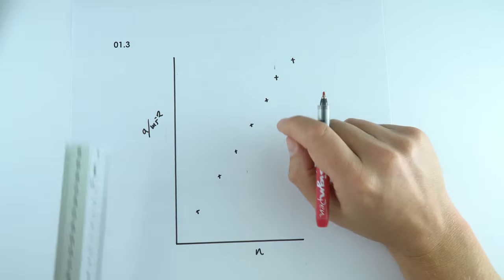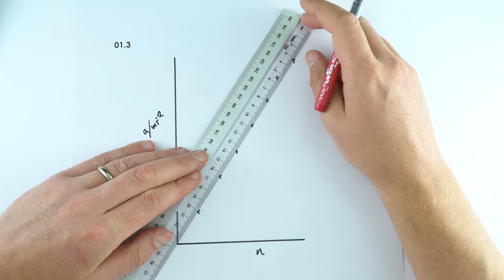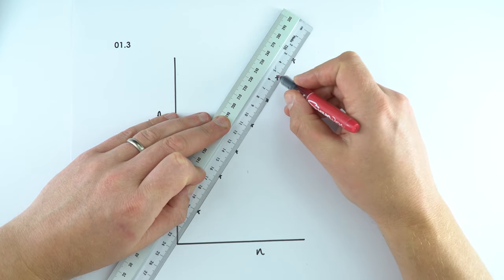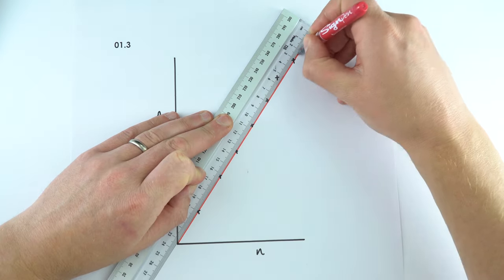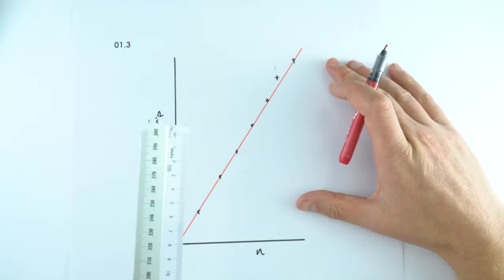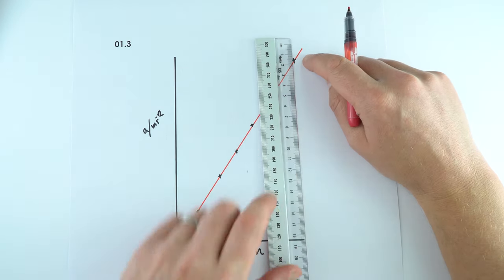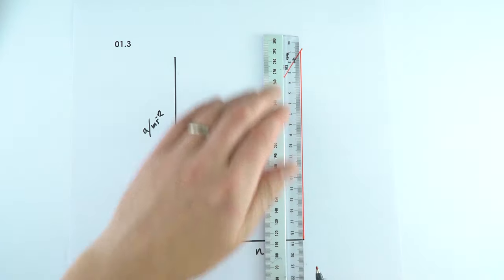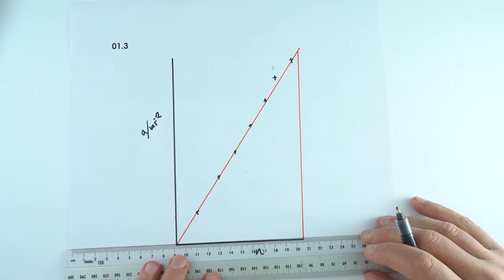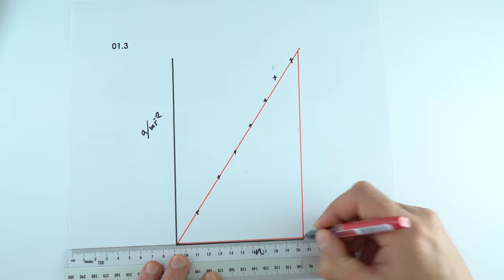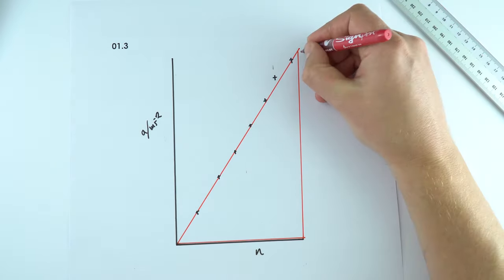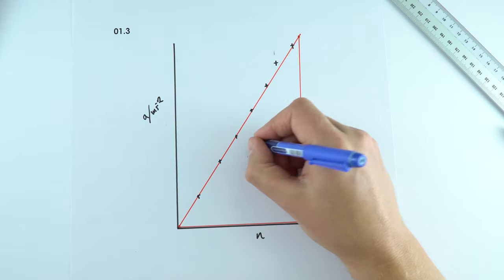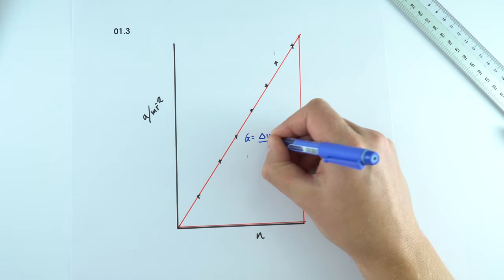Question 1.3 had a graph where data was plotted and we had to put in a line of best fit. You need a 30 cm clear ruler — line it up so you have approximately the same number of points above and below the line, then draw a straight line. Once drawn, you need to draw a triangle onto the graph to show where you're taking points to work out the gradient. Big triangles are essential.